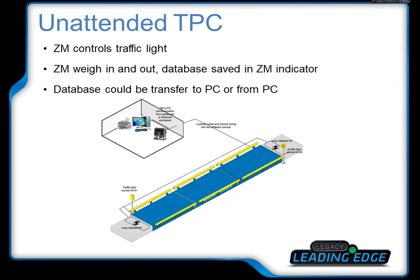The sixth type of application is called unattended TPC — TPC stands for Truck, Product, and Customer. It is very similar to the previous type, but this indicator can also be used for weigh in and weigh out. The database is saved in the ZAM indicator and can be transferred to or from the PC using FTP or USB.